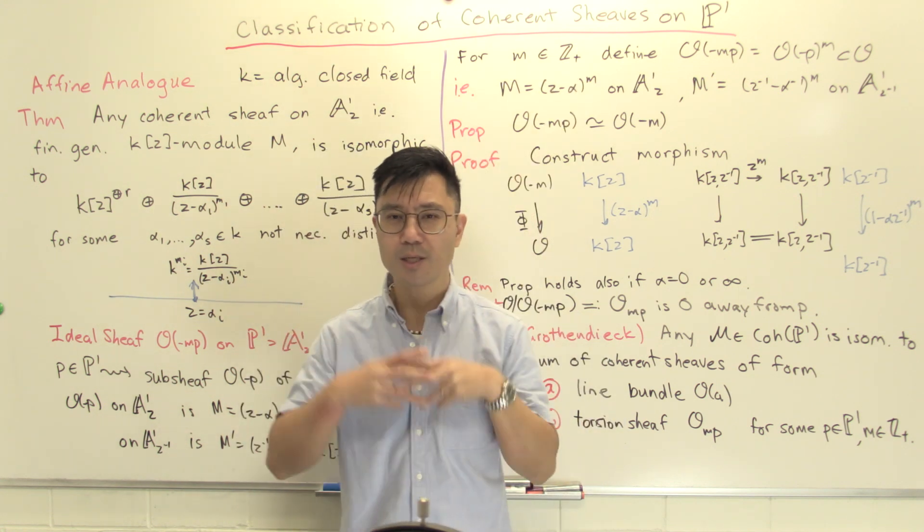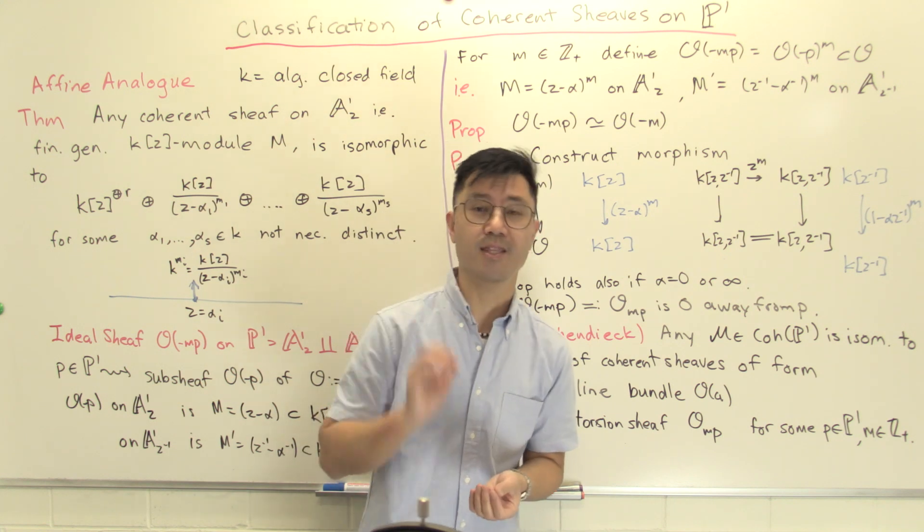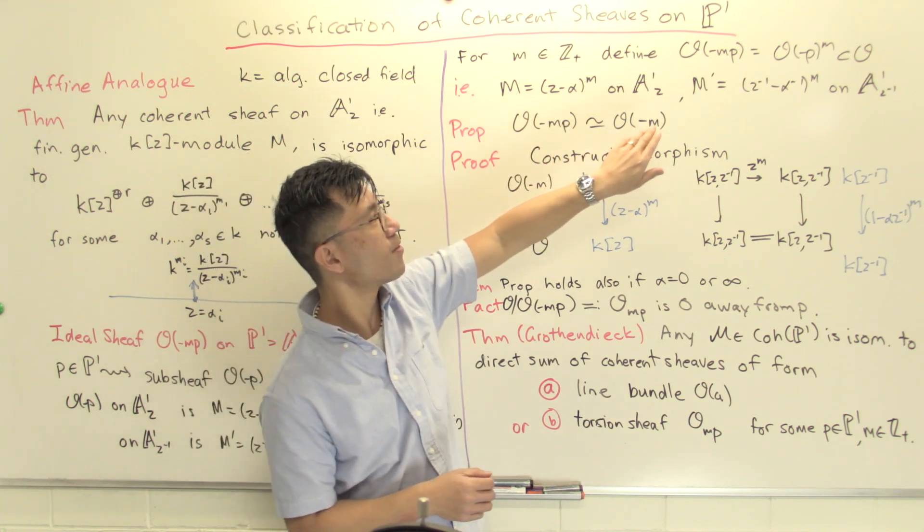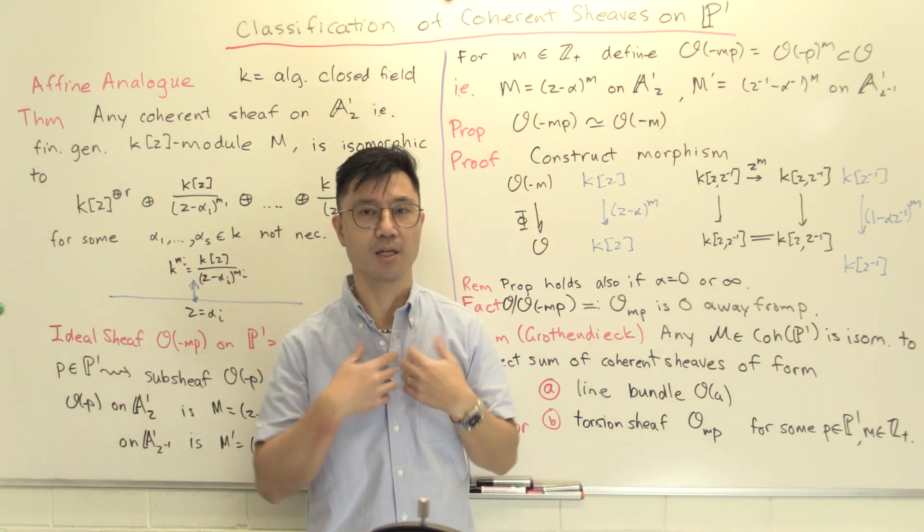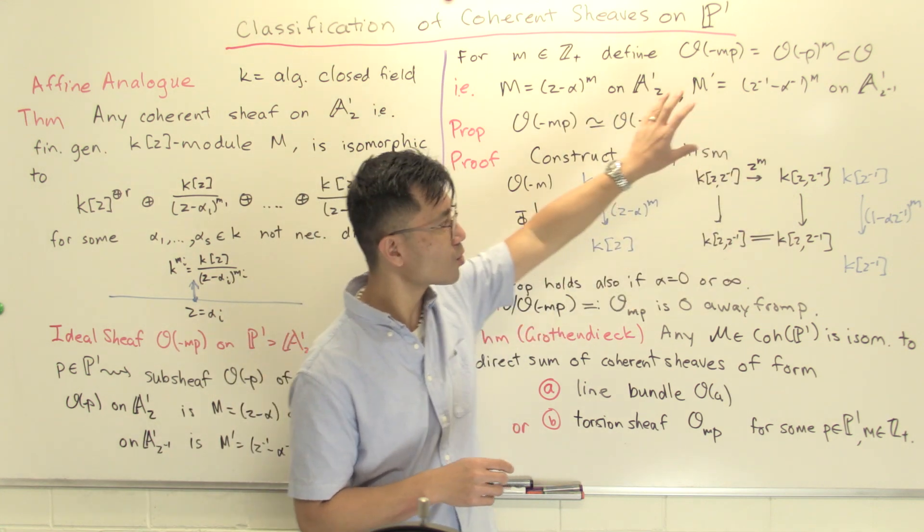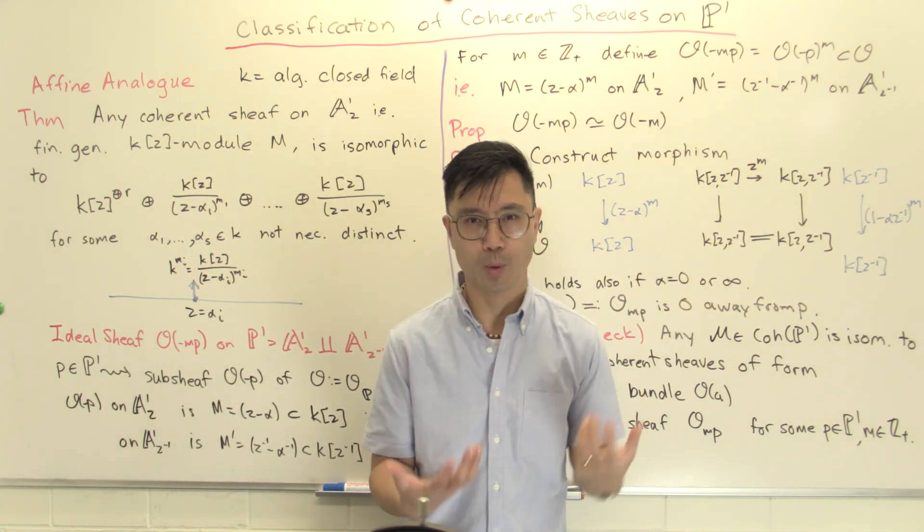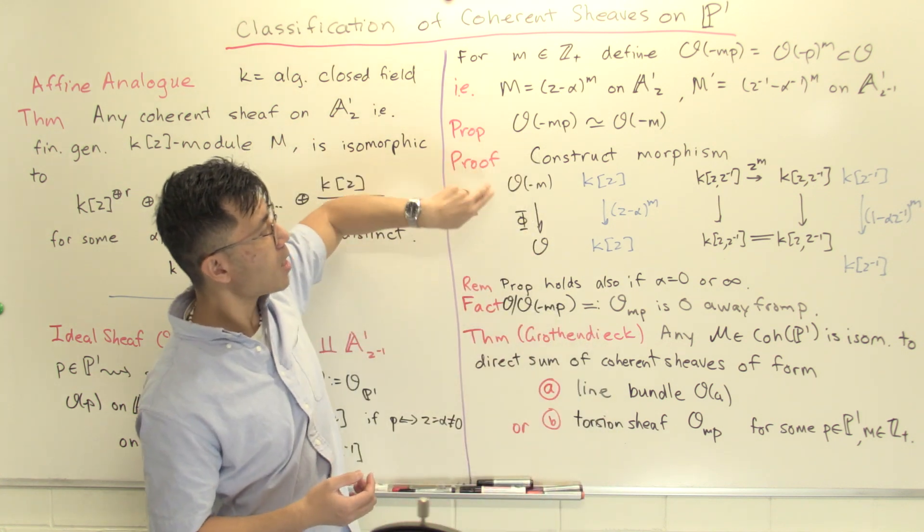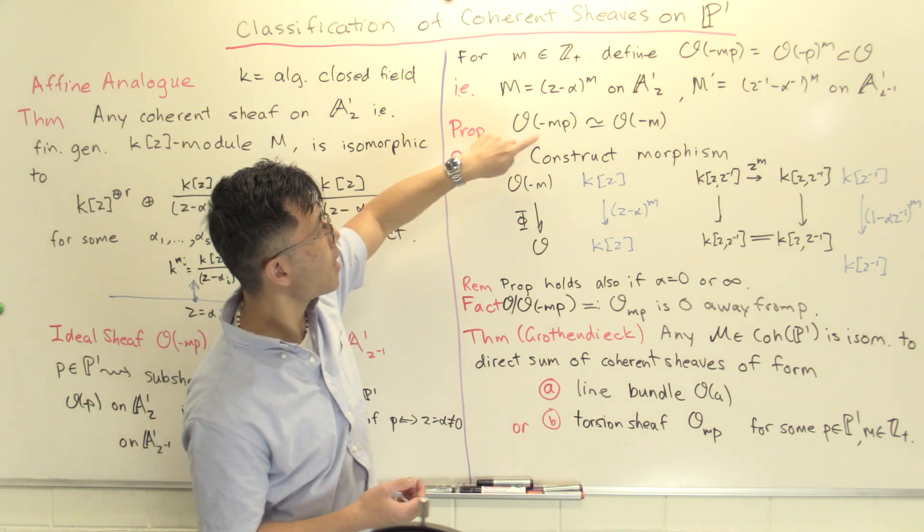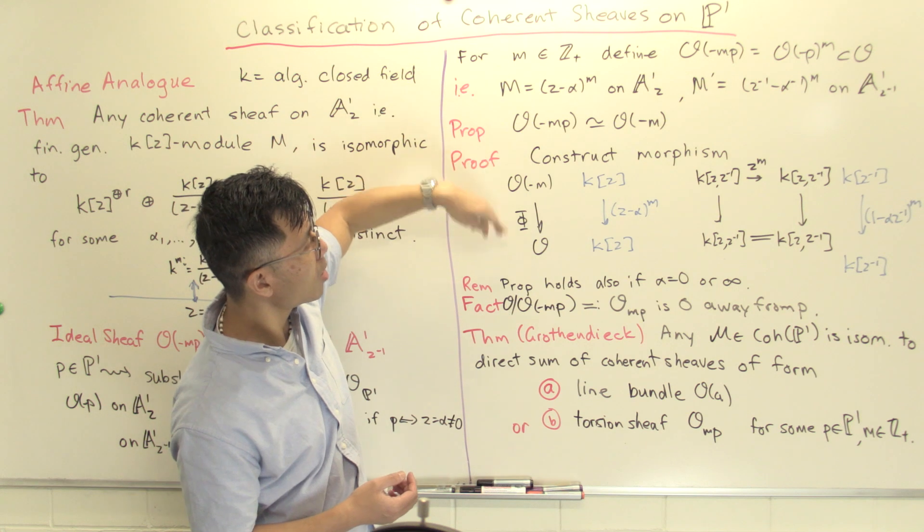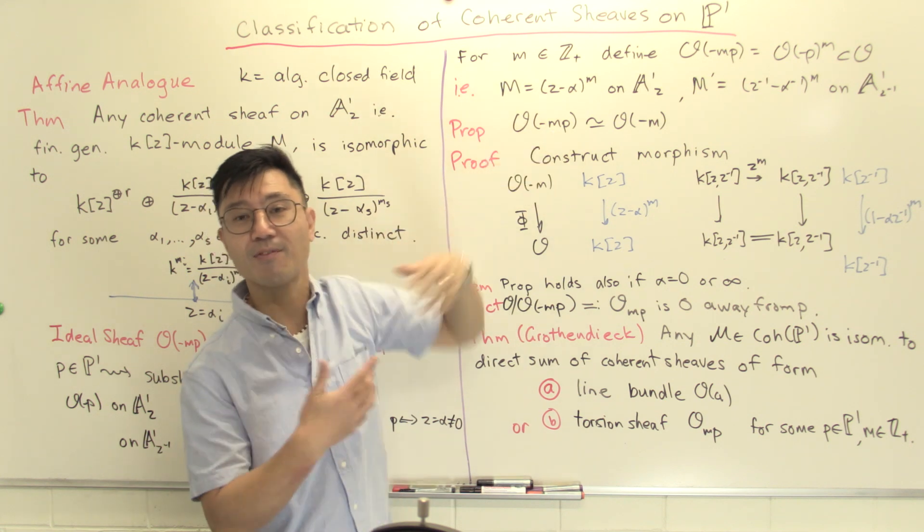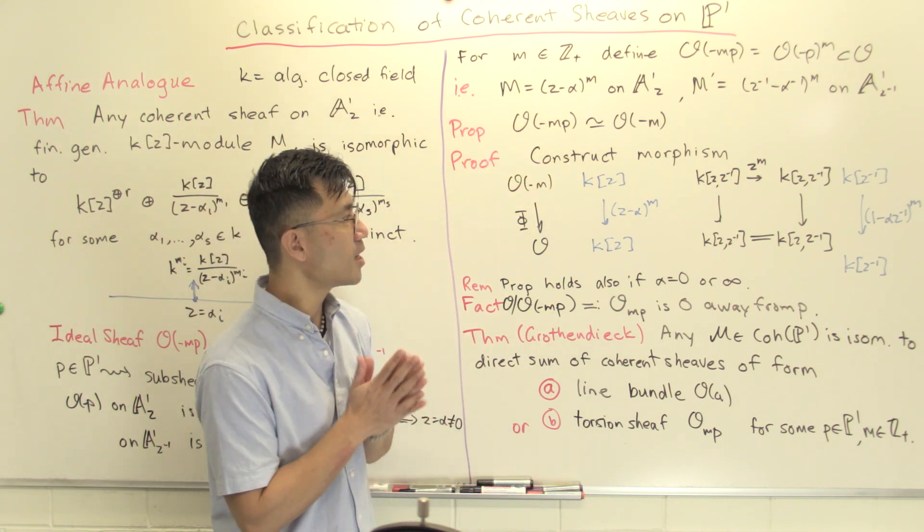It looks a little bit different, but actually up to isomorphism, we've seen this before. I want to show you that this O(-mp) is isomorphic to this line bundle O(-m) that I've introduced in a previous video. The proof is quite nice, and it helps you understand some easy ways to work with coherent sheaves. What I'm going to do is produce a map from O(-m) to O. Remember this O(-mp) is a subsheaf of this. I'm going to show you that this is an injective map whose image is O(-mp). If I can do that, then I'm done.